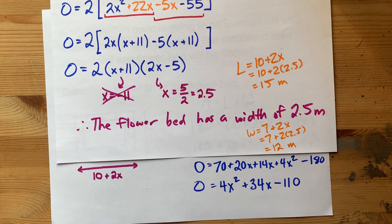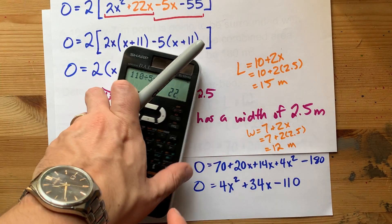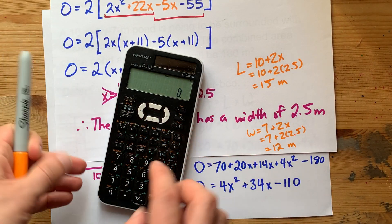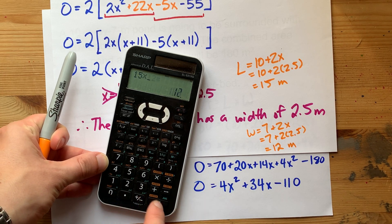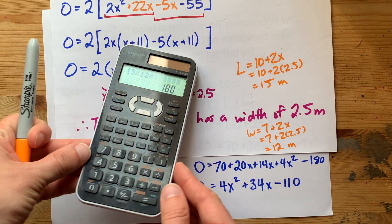Let's just check to make sure that 15 by 12 are new proposed dimensions. Give us 180 meters squared. Oh yes, it definitely does.